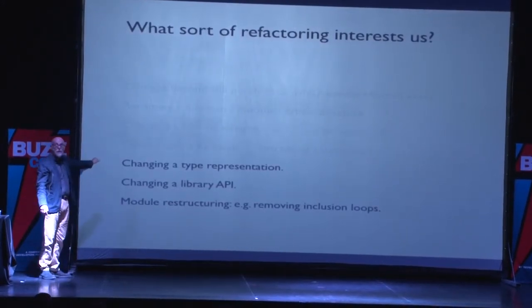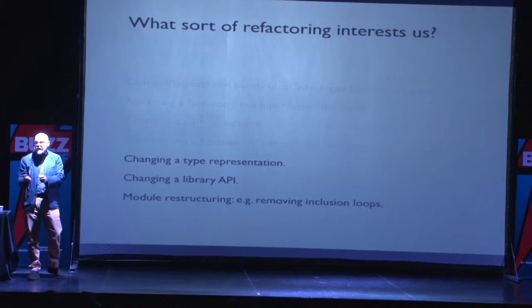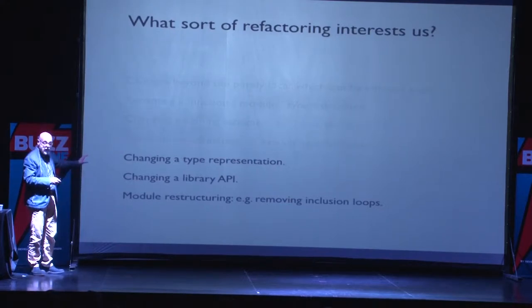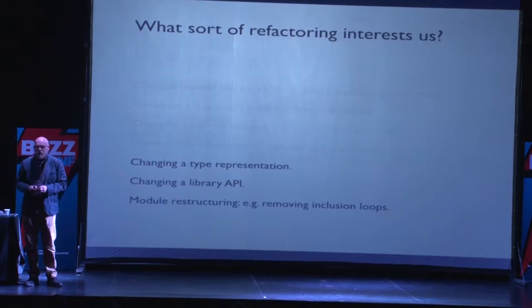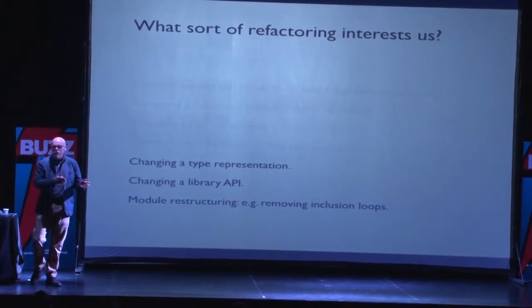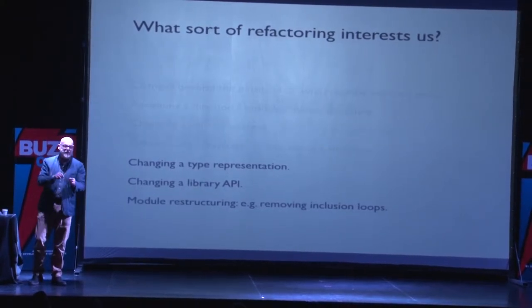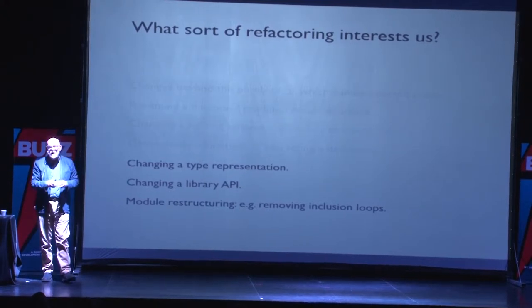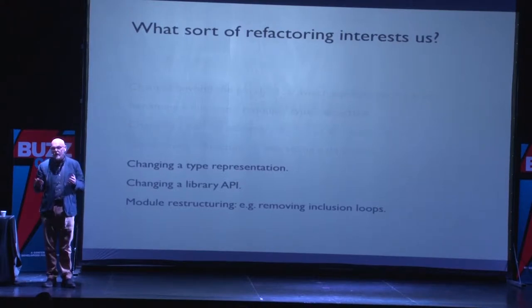At a larger scale, we might look at something like changing a type representation — moving from a concrete data type to an abstract data type. We might want to change an API for a library. The Erlang standard library for regular expressions a few releases ago changed from one interface to a completely different one, including indexing positions starting at one rather than zero — just for the hell of it. We might also want to look at how modules are interrelated, trying to pull something out and make the structure simpler.